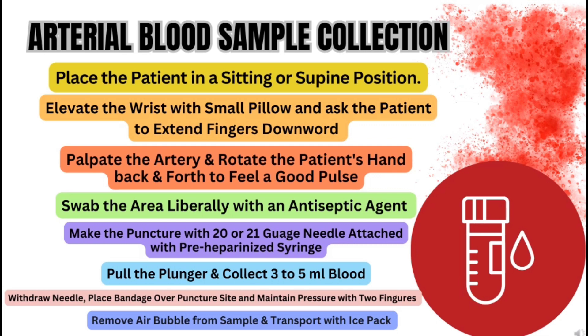It is easy to stop bleeding after venipuncture, but in case of arterial blood you have to apply pressure for a longer time. The first and very important reason is that arteries have high pressure compared to veins, so clot formation takes more time. After taking the sample, remove air bubbles from the syringe, because air bubbles consist of different gases and can alter the values of the blood gas results.